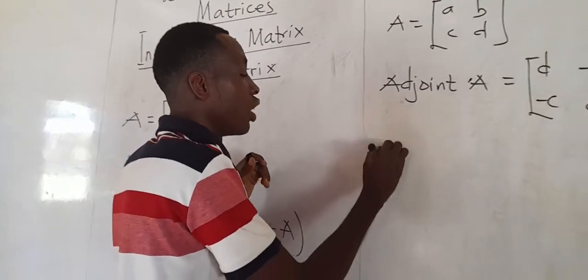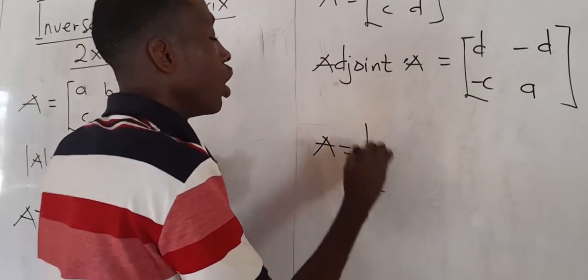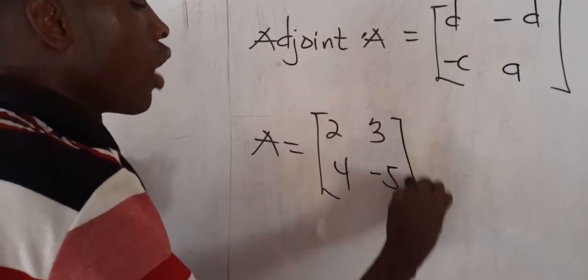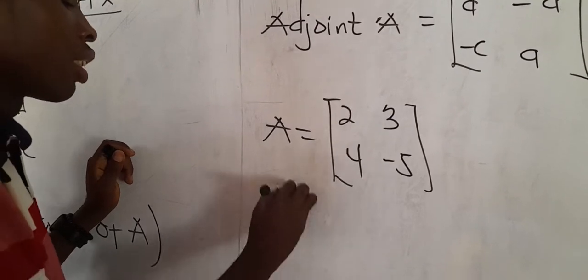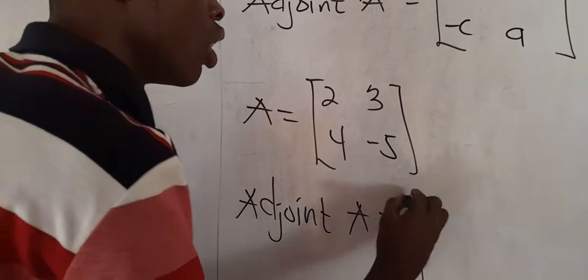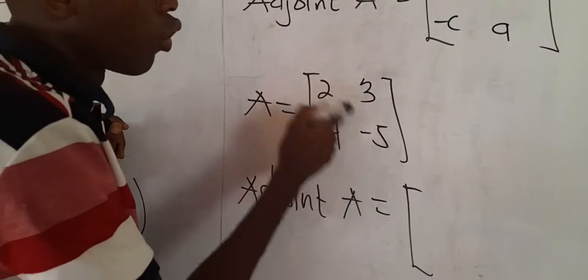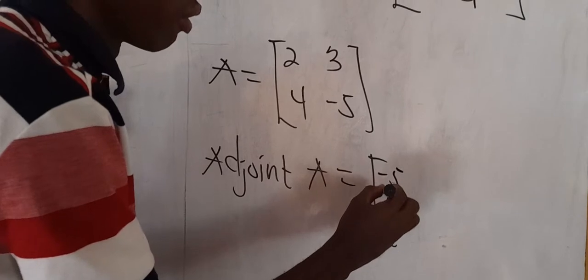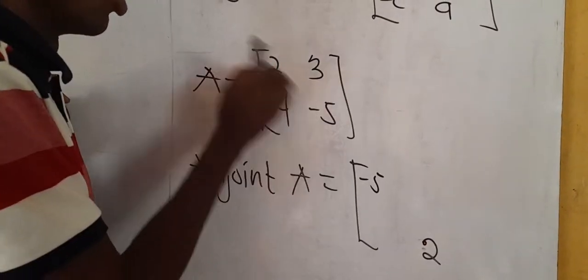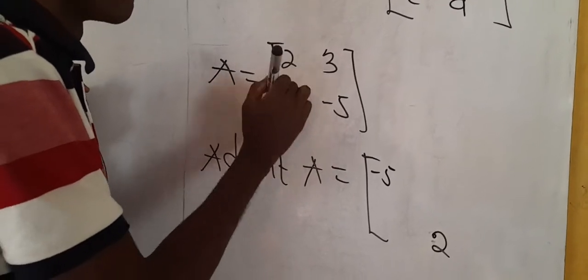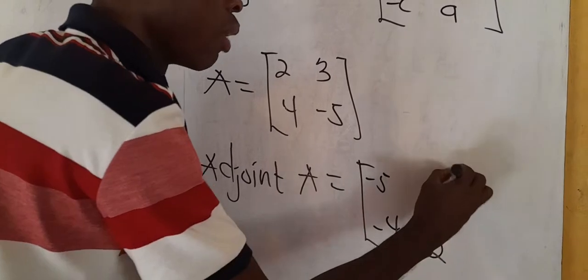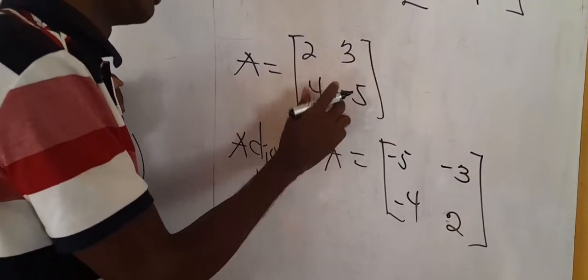So if we have a matrix A equal to [2, 3; 4, -5] and we are asked to find the adjoint, we swap the position of the principal diagonal elements. So -5 comes here and 2 goes there, then we maintain the position of 4 and 3 but negate them. This becomes the adjoint of this matrix.